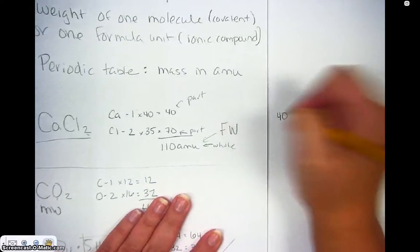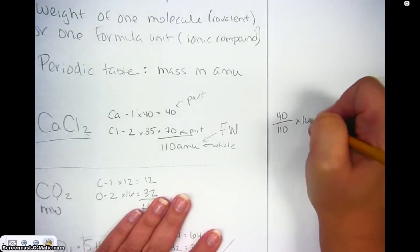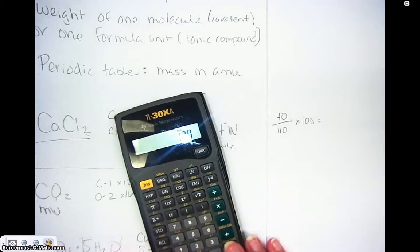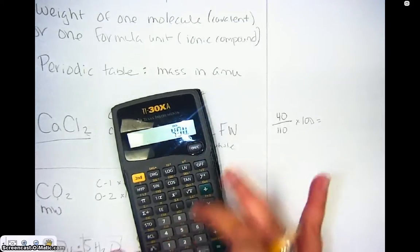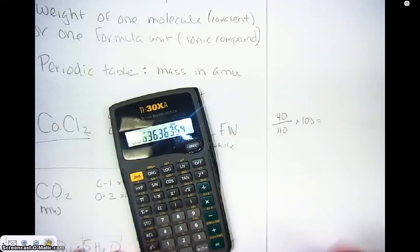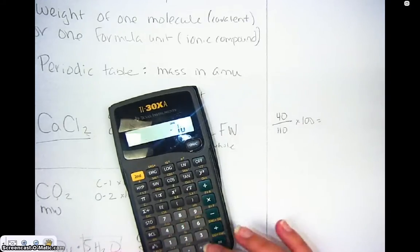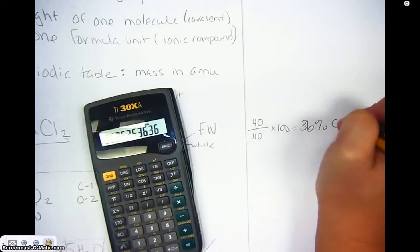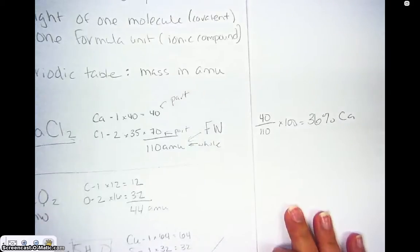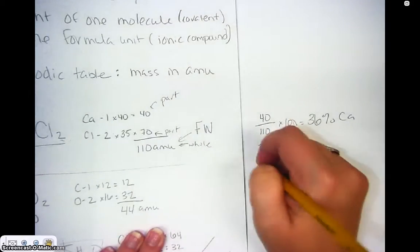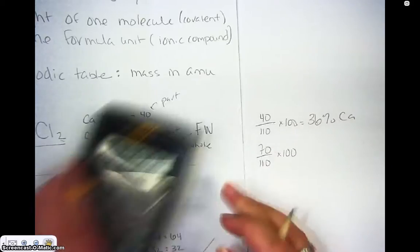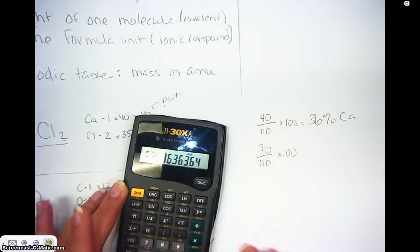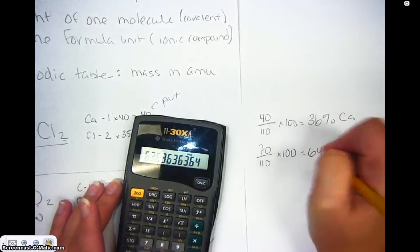So, you would take 40 out of 110, and we'll multiply by 100, and what does that give me? 40 divided by 110 times 100. And then if I wanted to do it for chlorine, then I would just do that. 70 out of 110 times 100, and I get about 64 percent chlorine.